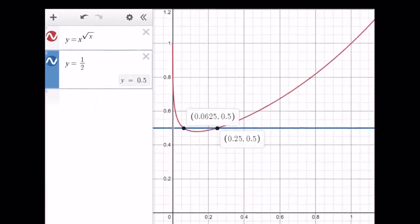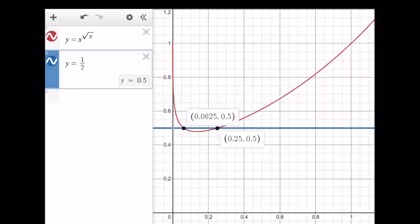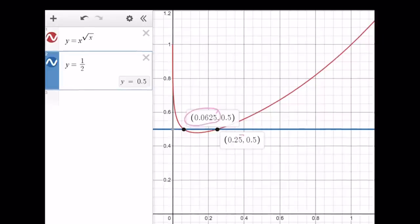Yay, there we go. So, the graph also shows you the intersection points exactly, by the way. 1 over 16 is this one, and this is 1 over 4. Obviously, the y value at that point is always going to be 1 half. Okay, this brings us to the end of this video.